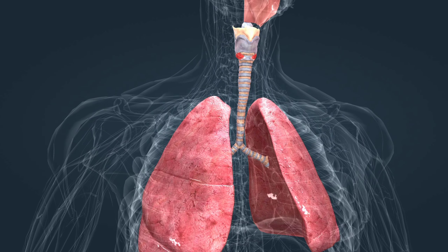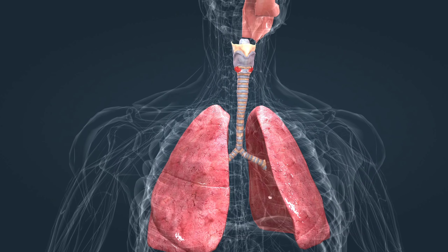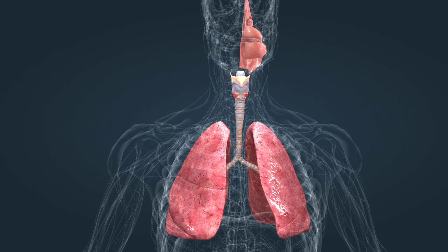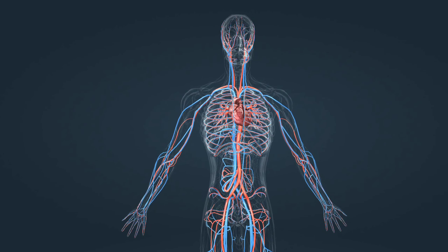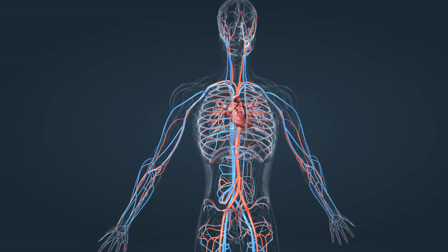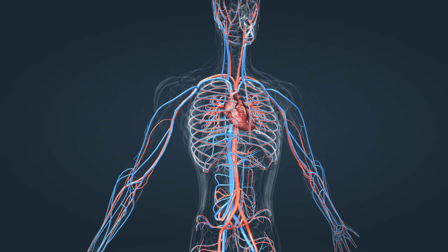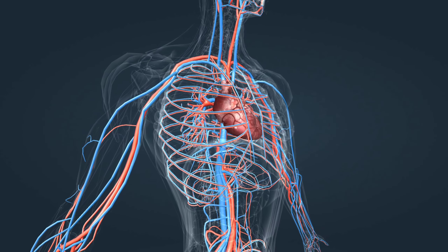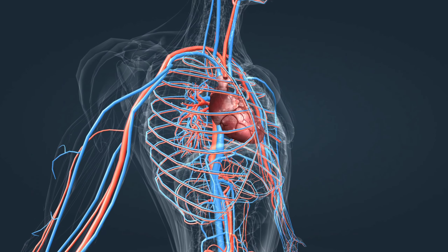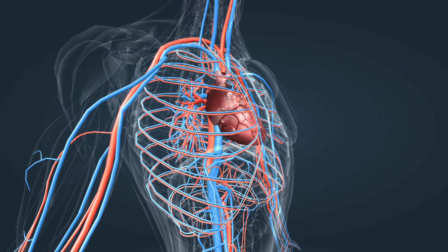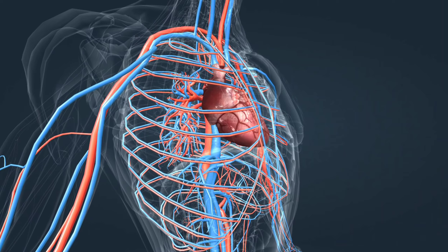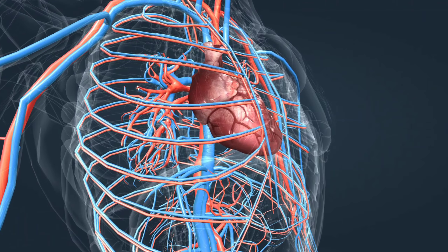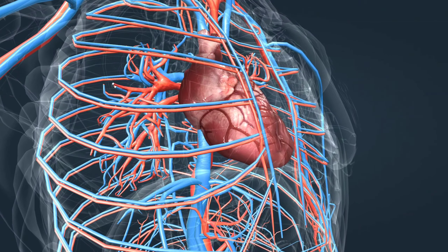The network of blood vessels in our body forms the cardiovascular system. Systemic circulation is the portion of the cardiovascular system that provides oxygen-rich blood to all the organs in the body and transports carbon dioxide away. Pulmonary circulation transports carbon dioxide-rich blood from the heart into the lungs, where carbon dioxide is released and oxygen is absorbed. Oxygen-rich blood is then transported to the heart, pumped through the blood vessels by the contractions of the heart.